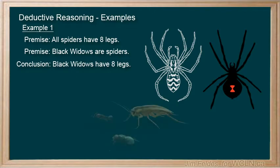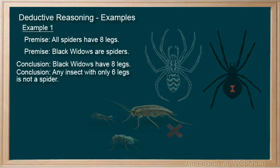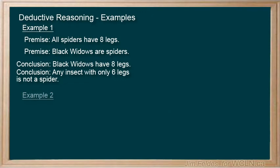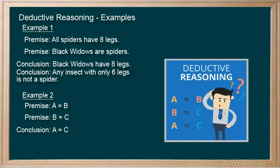We could also use the general premise to make a statement of exclusion. Any insect with only six legs is not a spider. Here's another one. If A equals B, and B equals C, we can make the statement that A equals C. The idea here is that there is no guesswork. We are just connecting things we know to be true, in different ways.